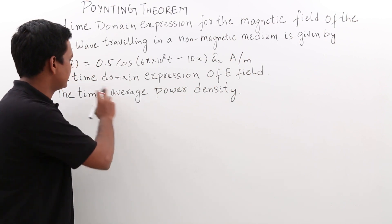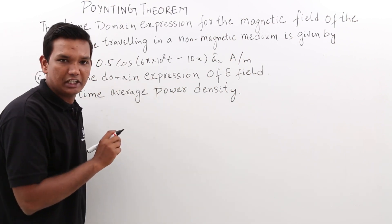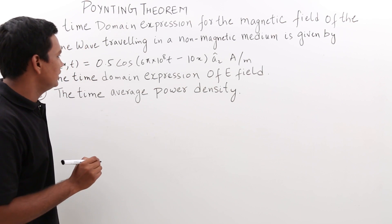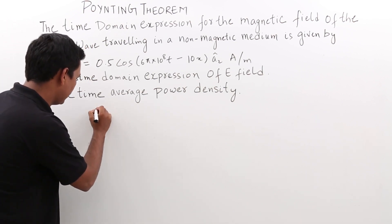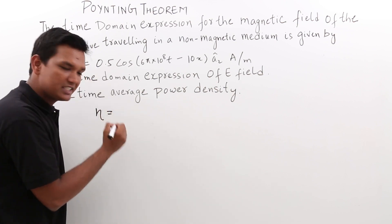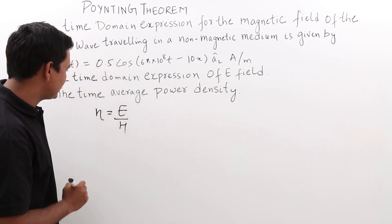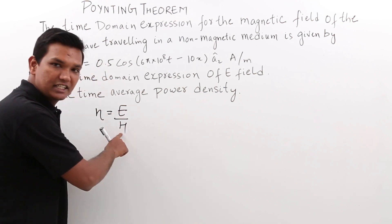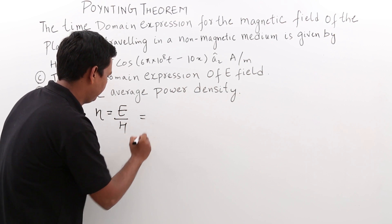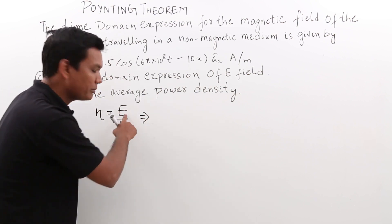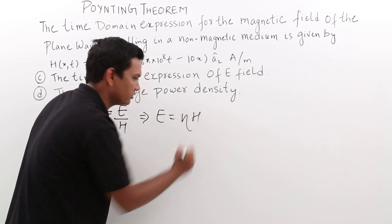The first part of the question asks us to find the time domain expression of the electric field. The basic equation is that the intrinsic impedance eta is given by E divided by H. Since the magnetic field H is given to us, the electric field will be nothing but eta times H.